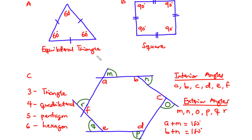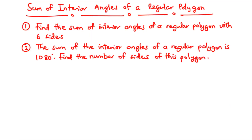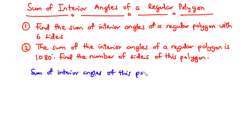Now let's talk about the sum of interior angles of a regular polygon. Given a regular polygon with N number of sides, the sum of interior angles is given by (N minus 2) times 180 degrees, where N is the number of sides.